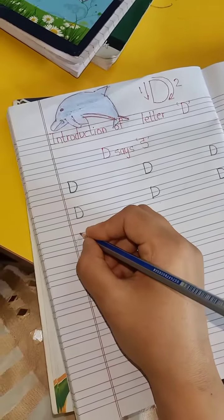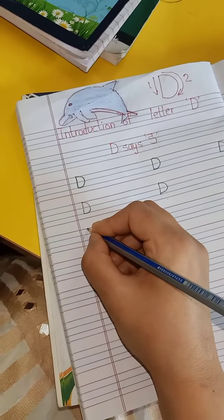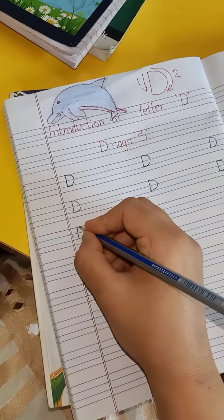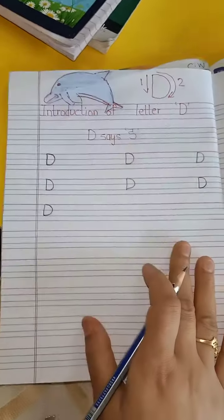Next, put a pencil here. Put a pencil on capital line. Okay, and make a standing line. Then make a curve from capital line to base line. It's a letter D.